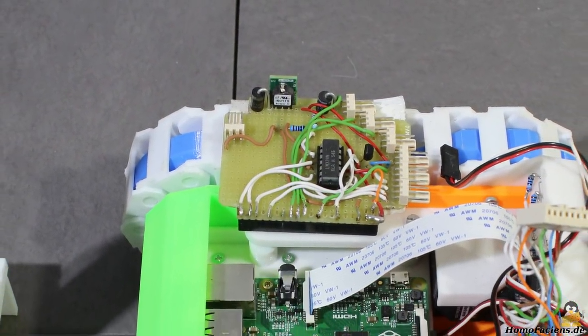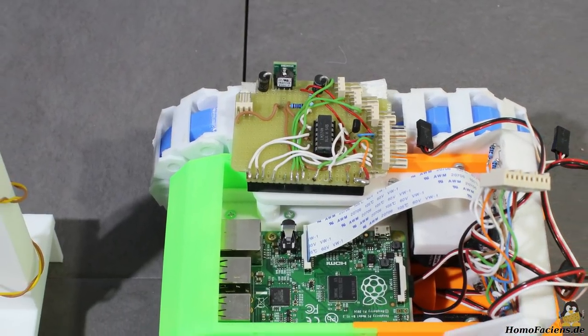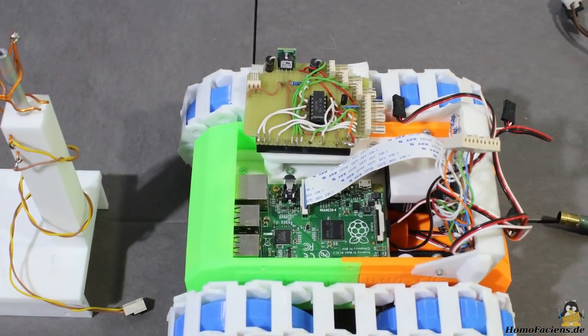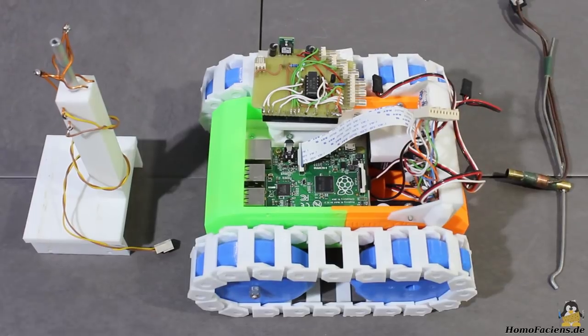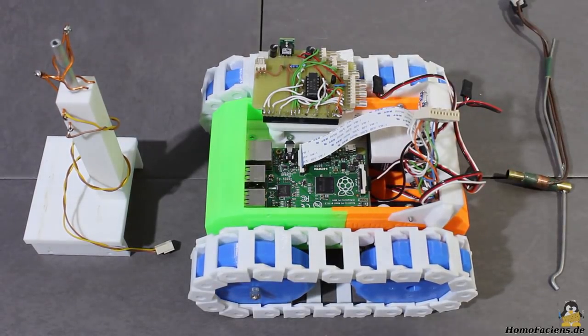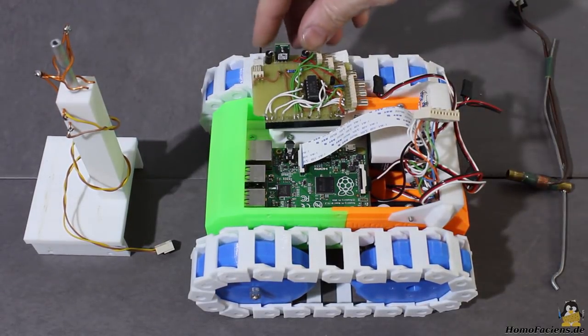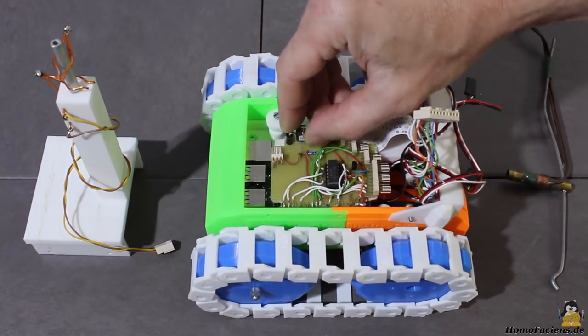With a step-down converter, the 12V input are reduced to 5V to avoid damage of the Raspberry Pi or the servos. Most of the electronics is on a tiny board that can be plugged on the GPIO header of the Raspberry Pi.